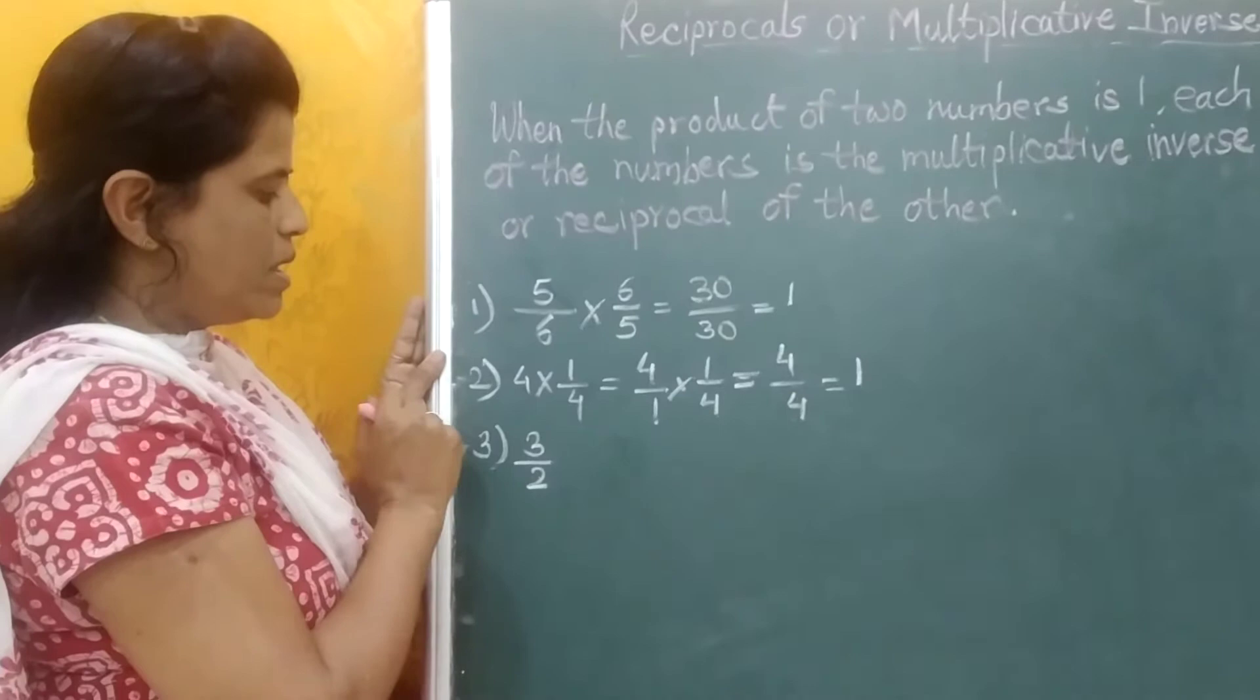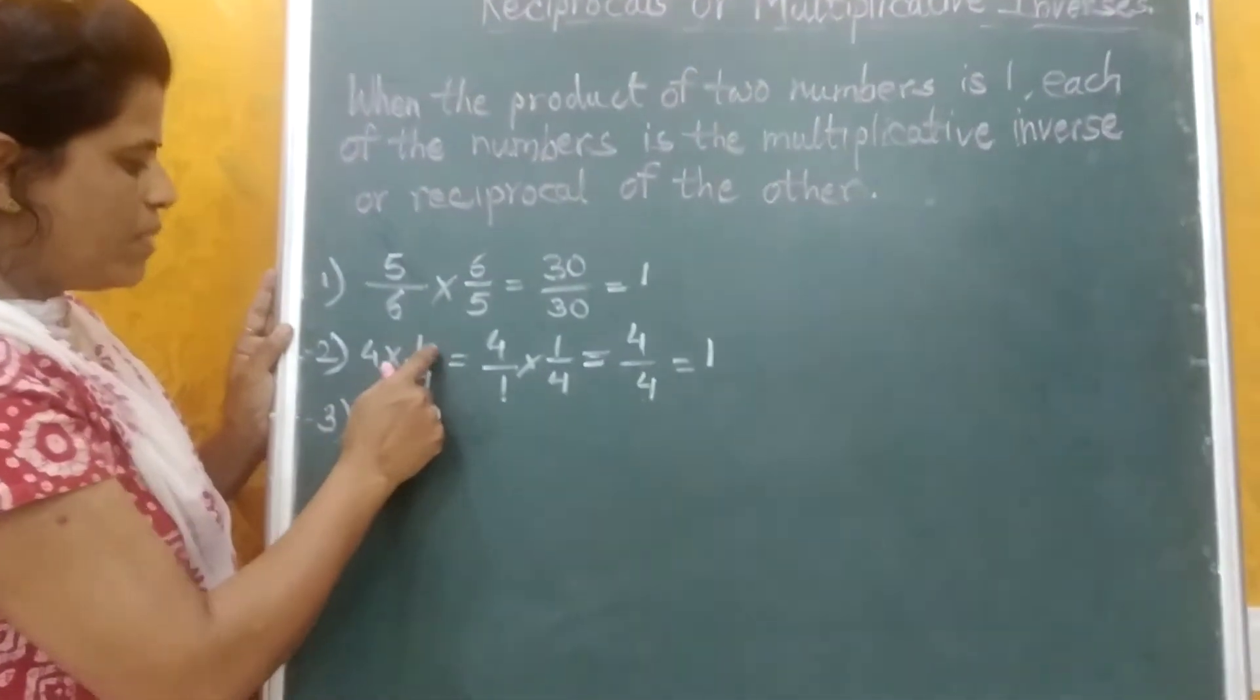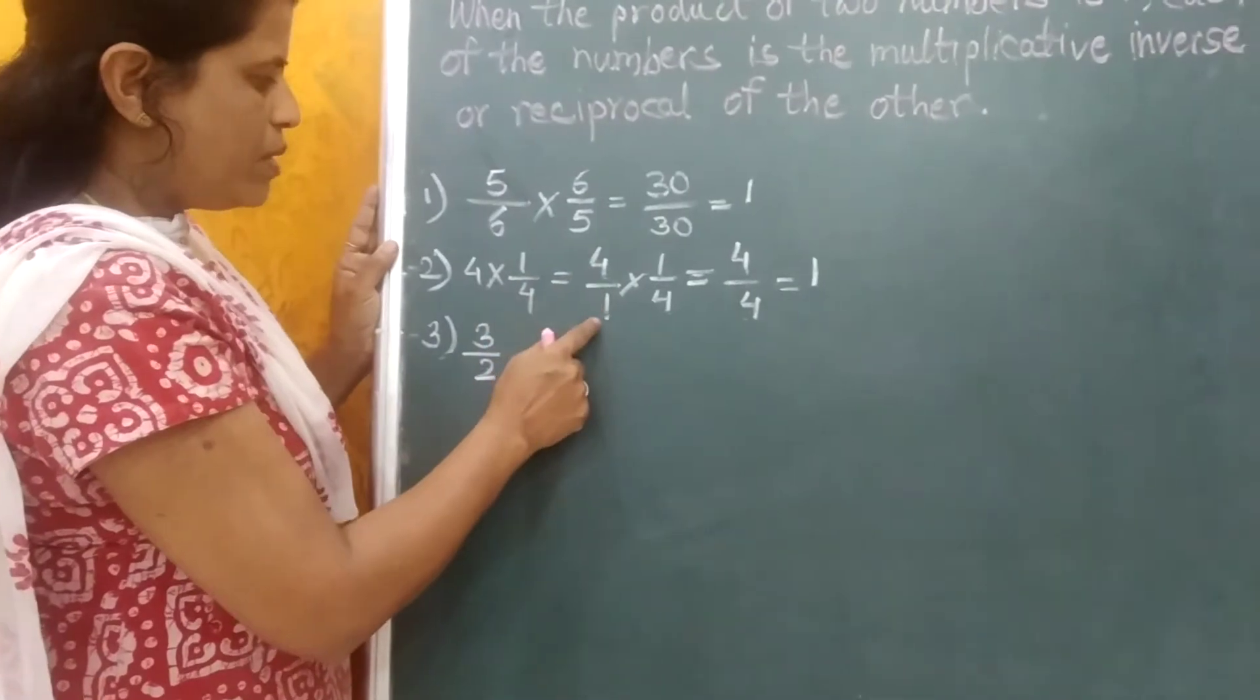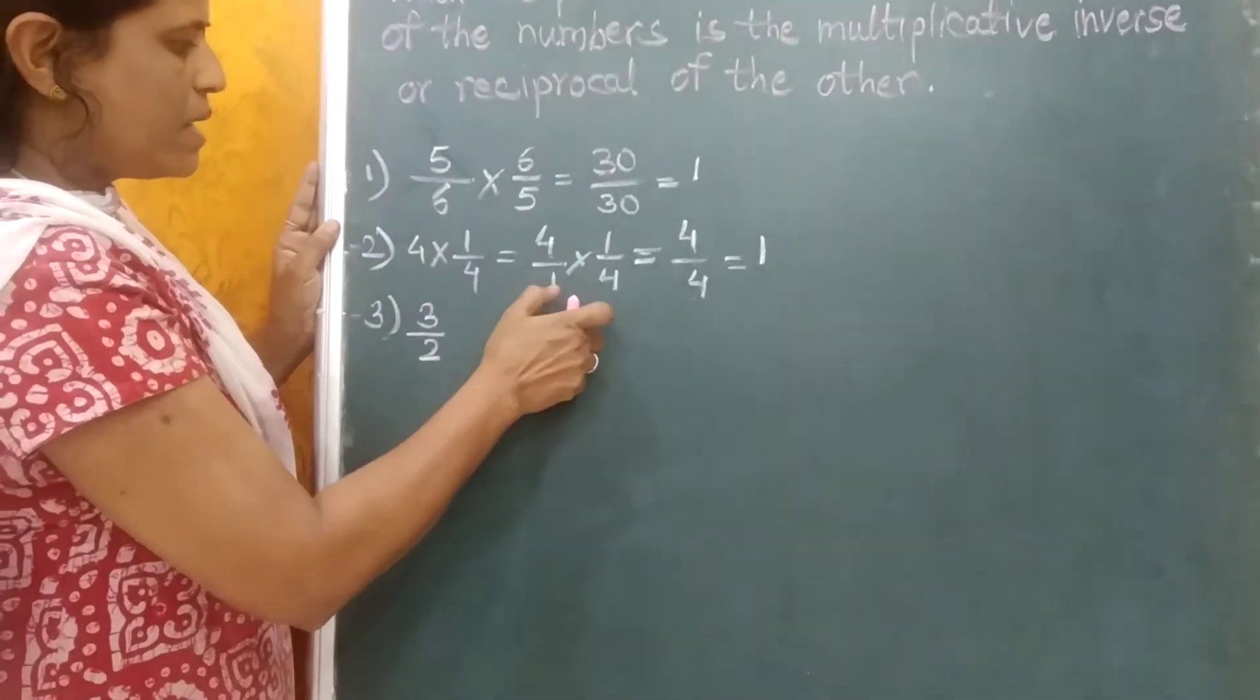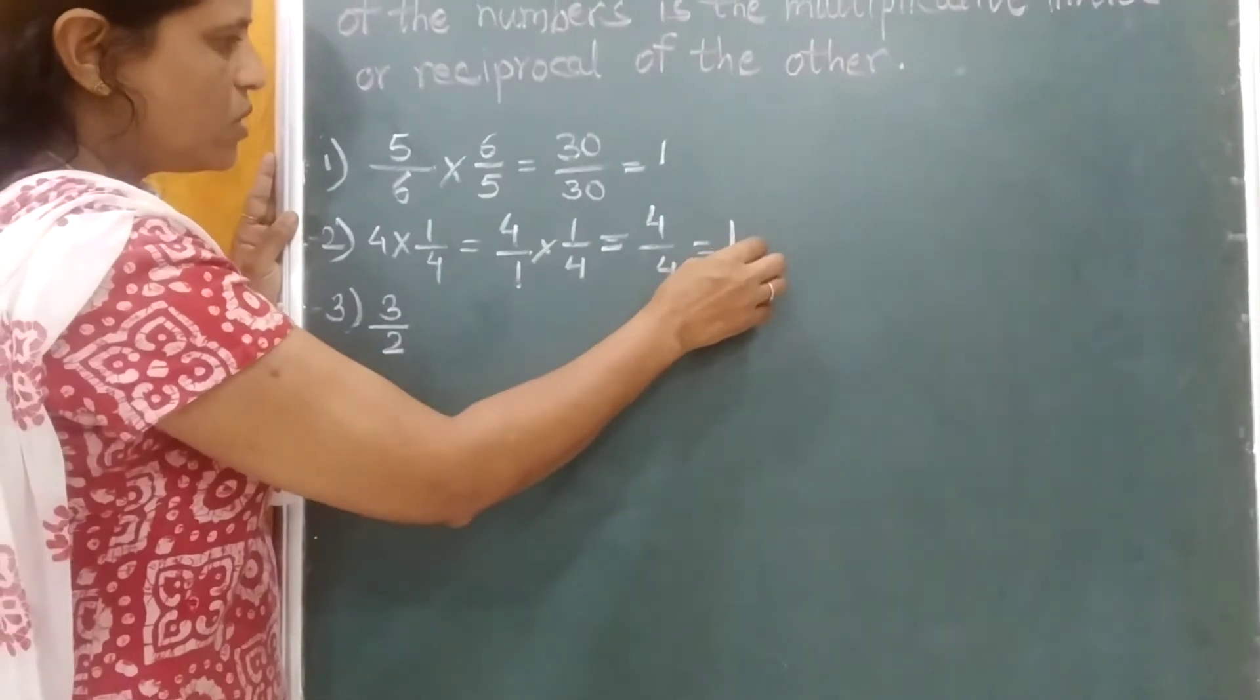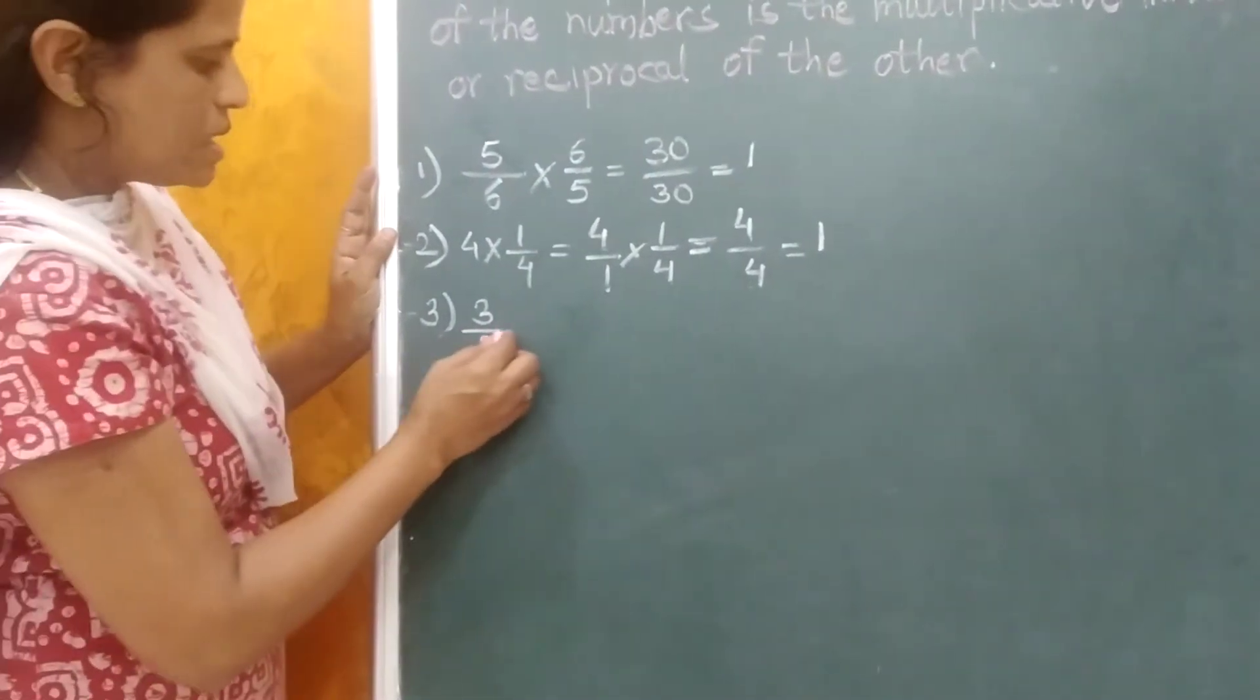Now see the second example. 4 multiplied by 1 upon 4. Here, 4 means 4 upon 1 which is multiplied by 1 upon 4 which is equal to 4 upon 4, equal to 1. Now see the third example.